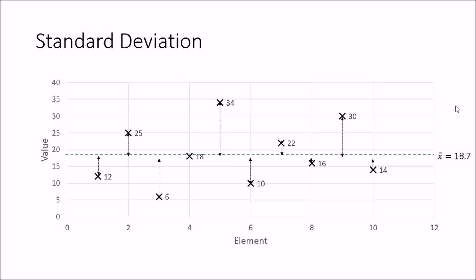The meaning of standard deviation is how much each value is deviated from the mean. For example, the first value 12 is deviated from 18.7 by 6.7. The value 25 is deviated from 18.7 by 6.3. Likewise, 6 is deviated by 12.7 and 18 is deviated by just 0.7.